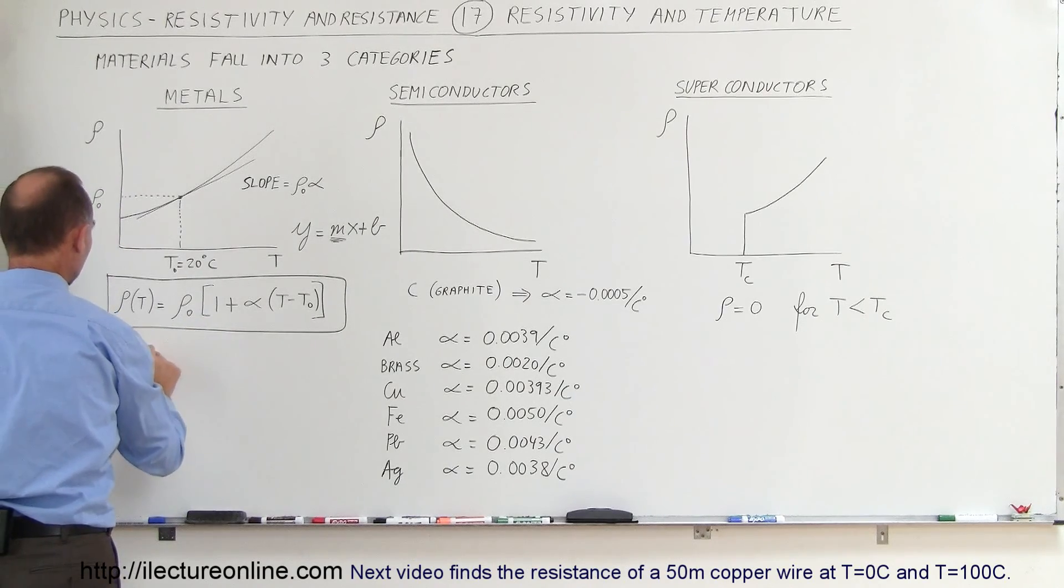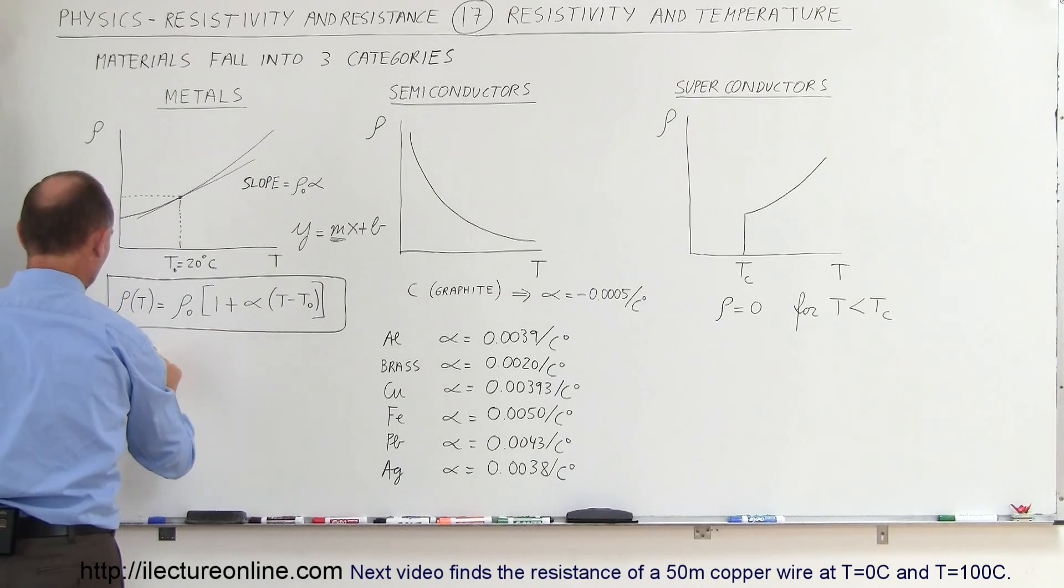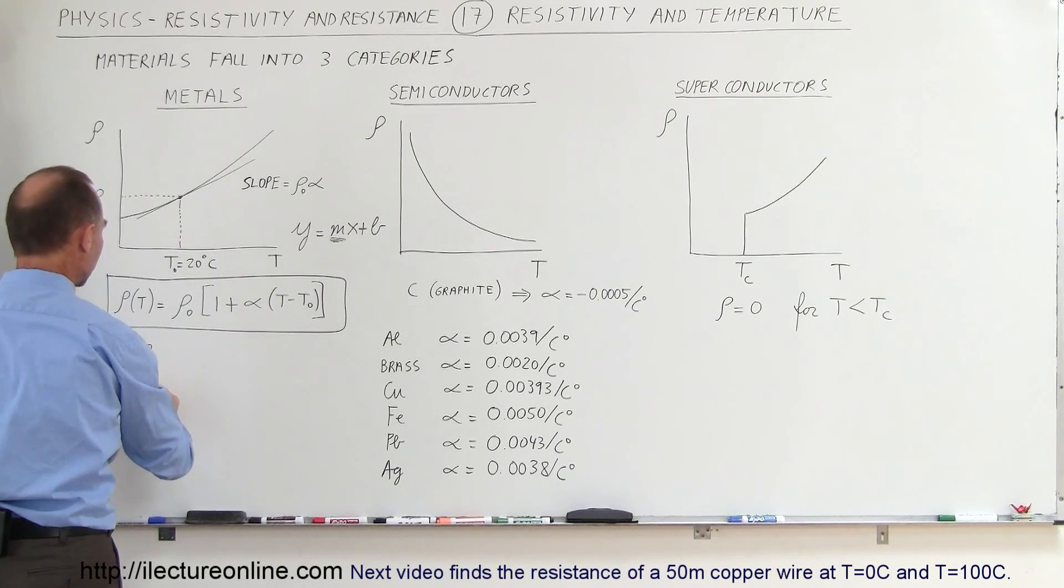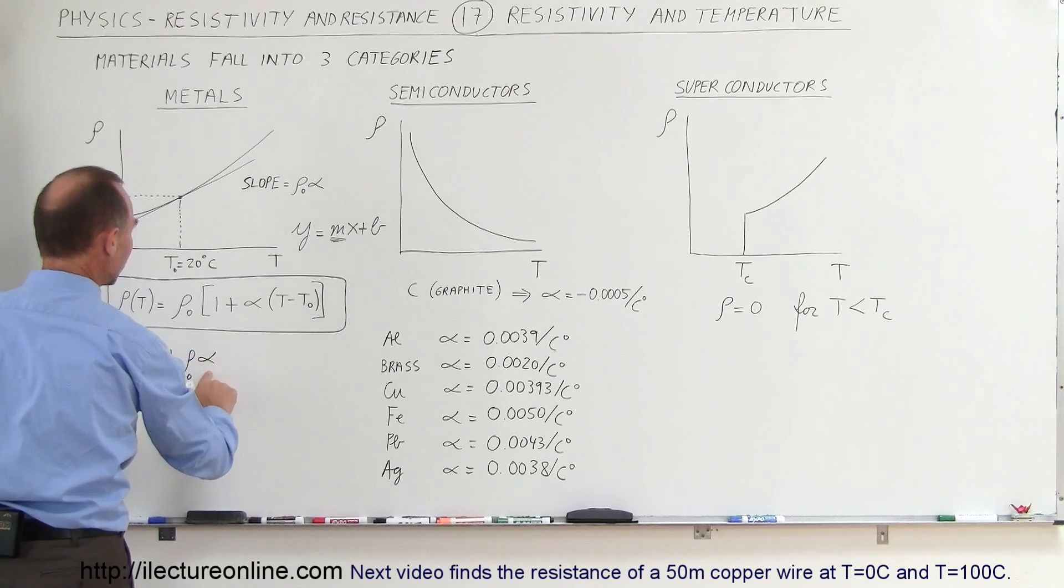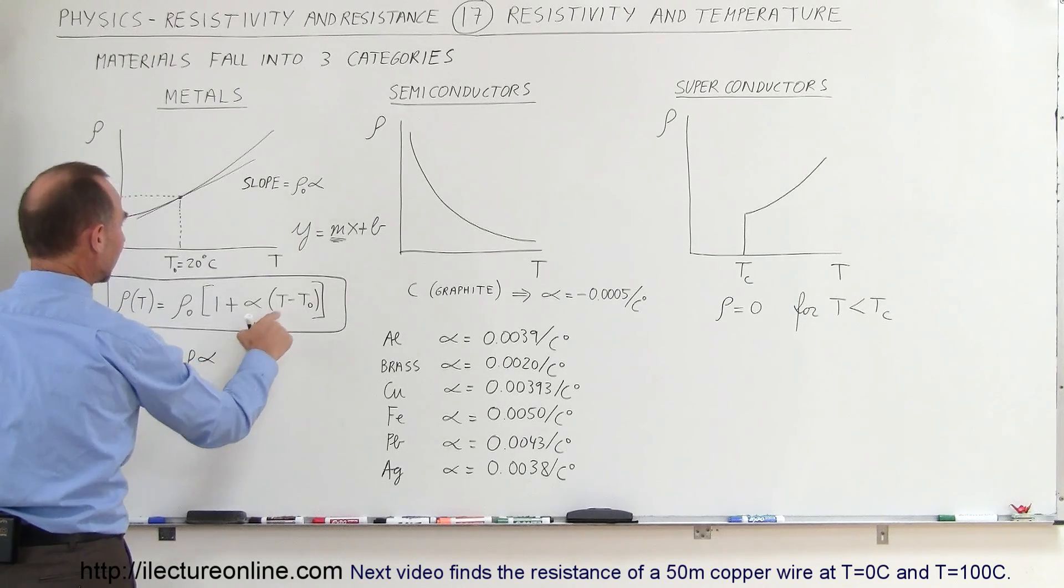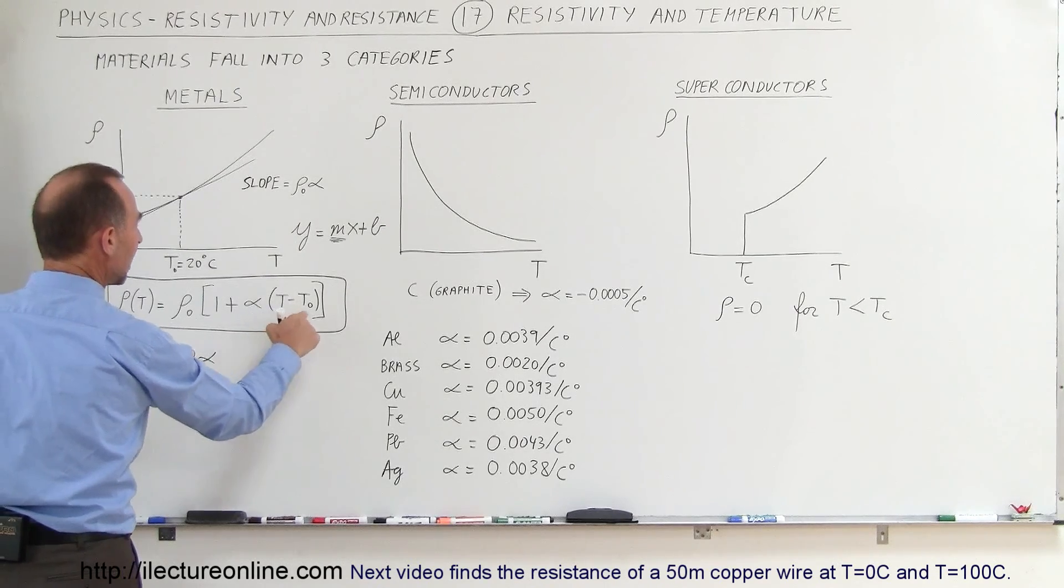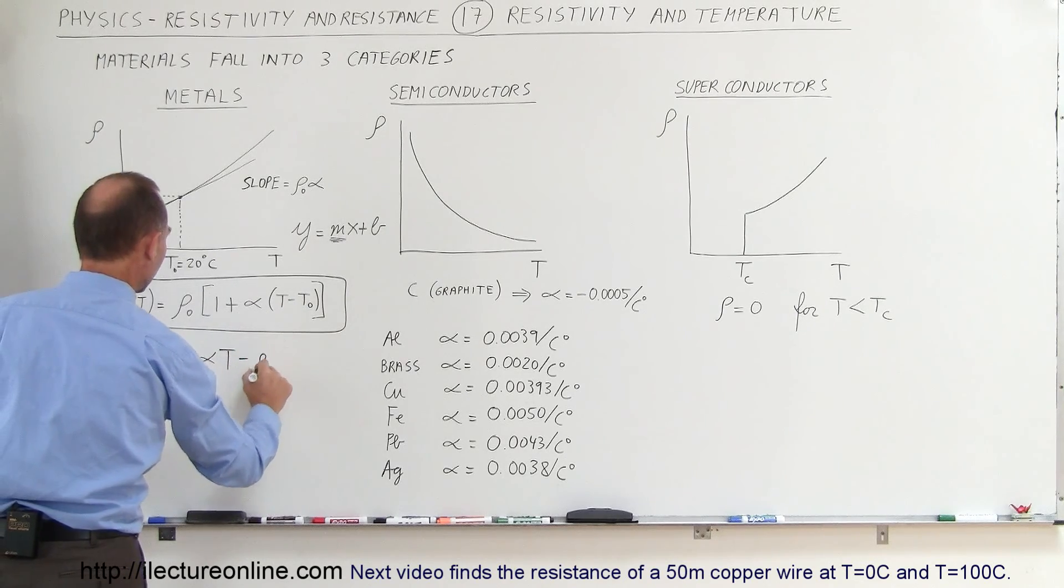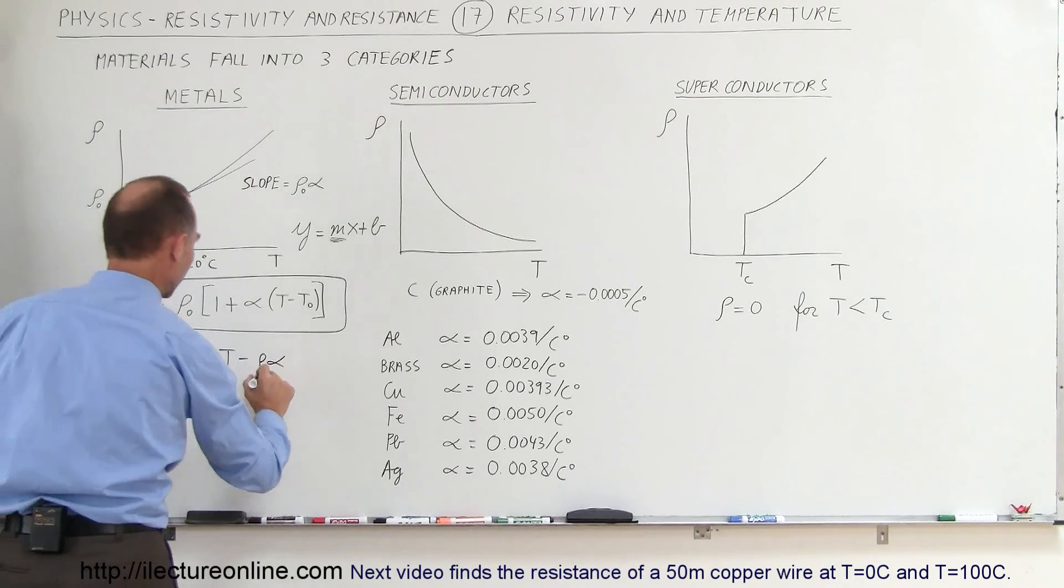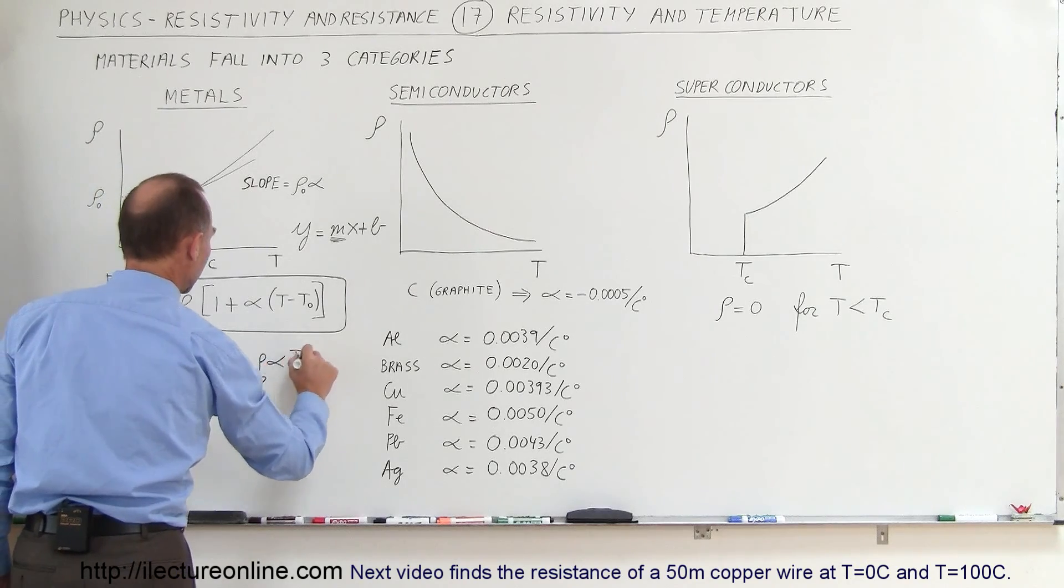Let's expand this equation to see what it looks like. The resistivity equals, I'm going to multiply this through, the resistivity at 20 degrees centigrade plus the resistivity at 20 degrees centigrade times the temperature coefficient, and then we multiply times T minus T sub naught.